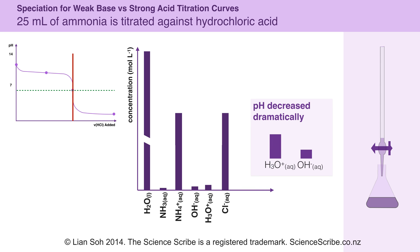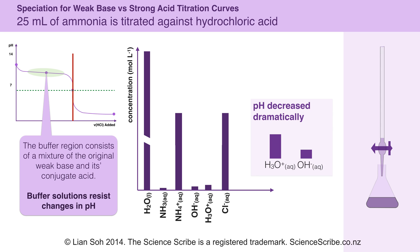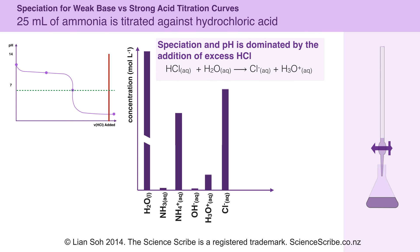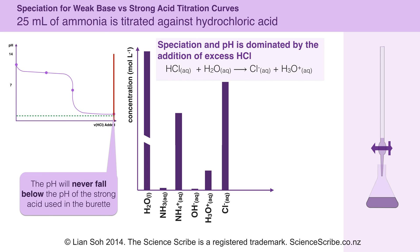The pH decreased dramatically because we're no longer in the buffer region. The buffer region consists of a mixture of the original weak base and its conjugate acid, and buffer solutions are able to resist changes in pH. As we reach the equivalence point, the integrity of the buffer solution decreased and could no longer resist changes in pH as we added more hydrochloric acid. If we keep adding hydrochloric acid, the contents in the flask becomes increasingly dominated by the excess hydrochloric acid, forming more hydronium ions and adding more chloride ions. Regardless, no matter how much hydrochloric acid is added, the pH of the flask contents will never be lower than the pH of the hydrochloric acid in the burette.